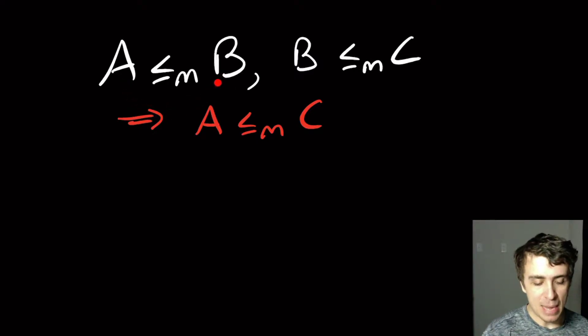It means that if A mapping reduces to B and B mapping reduces to C, then that implies that A mapping reduces to C. So this is actually a pretty quick proof.